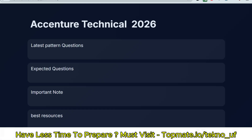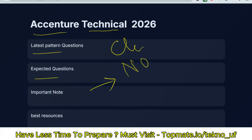Hello, dear family members. If you are preparing for the Essential Technical Assessment or Essential Cognitive Assessment and have questions like what are the real questions being asked, what are the expected questions, and what is the difficulty level, then this video is for you. Also, a very important point: there will be no verbal ability section.